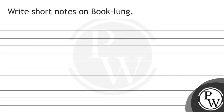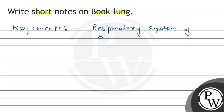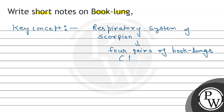Hello, let's read the question - write a short note on Book Lungs. So we have to write a short note on Book Lungs. Key concept: the respiratory system of scorpion is highly characteristic and it consists of four pairs of Book Lungs. These are also called Lung Books, and are also called pulmonary sacs.